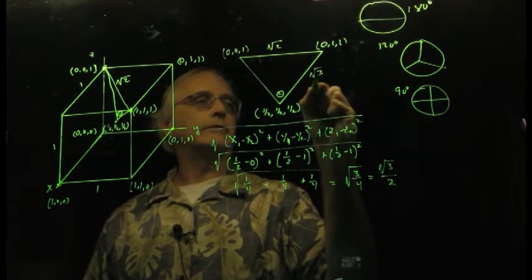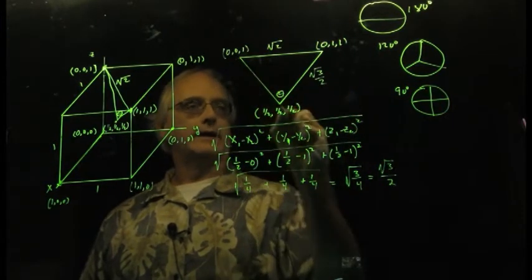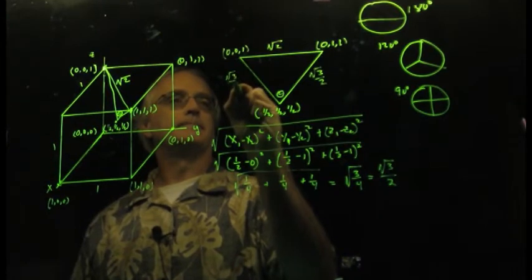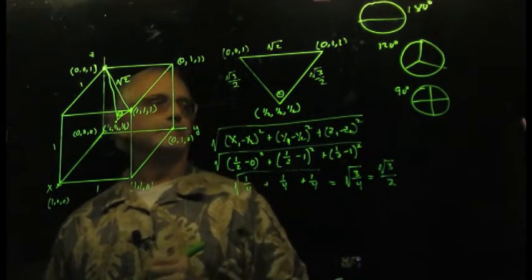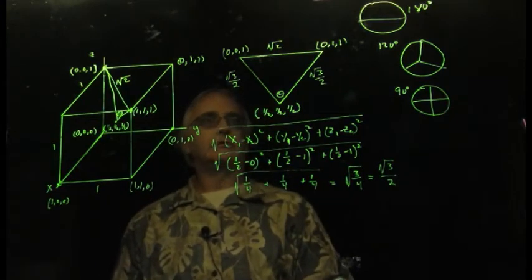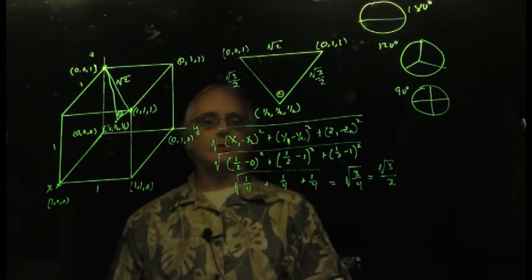That dimension, square root of 3 over 2. And if I repeat that over here, it's the same thing on this side. Now, there are the sides of my triangle that I've pulled out of this cube. And I need one last bit of information.